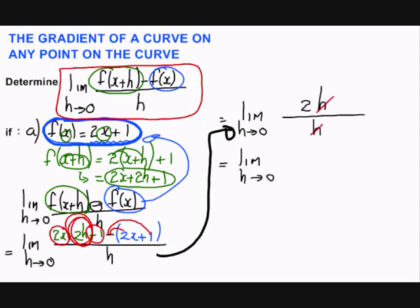Now we can say that h and h will actually cancel out. So we are left with 2. Now at this point you can't do anything over here. So you're just left with 2. You can't simplify it. There's nothing to cancel out. Now we're going to apply the limit.